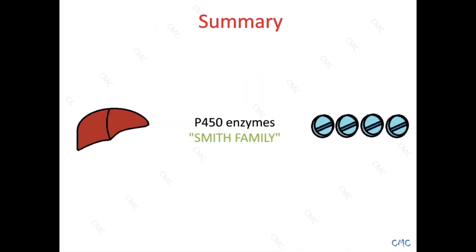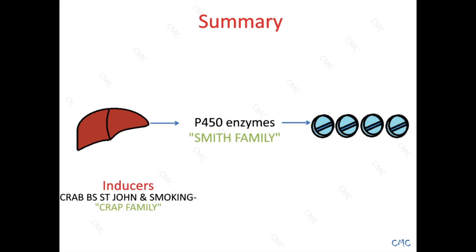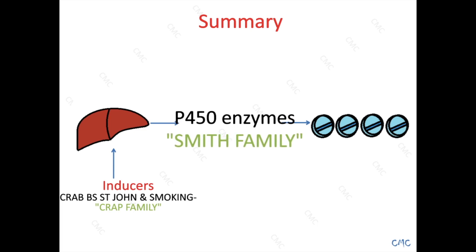Let's have a quick recap. The liver produces P450 enzymes — the Smith family — who then metabolize the medications that you put into your body. The inducers, in other words the crap family, with the mnemonic CRAP BS, St. John's Wort, and smoking, induce the liver to produce more P450 enzymes. This results in the medication being metabolized a lot faster, and therefore the overall effect of the medication is really crap because there aren't that many left to work.